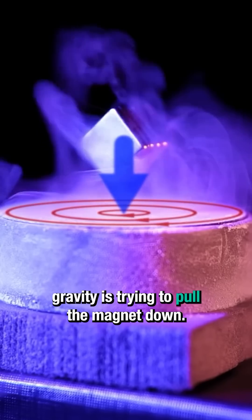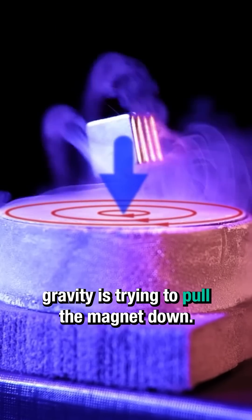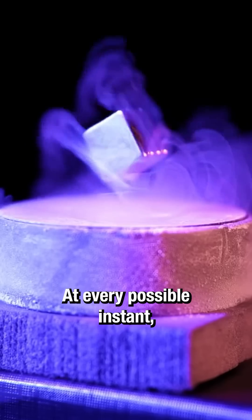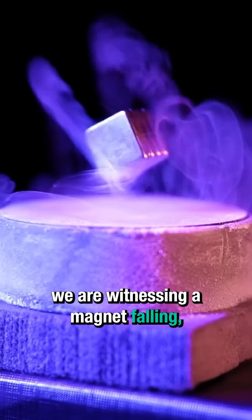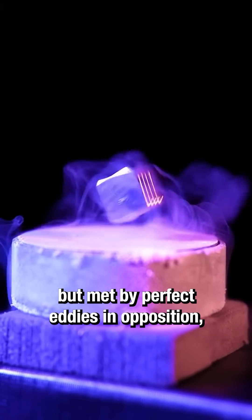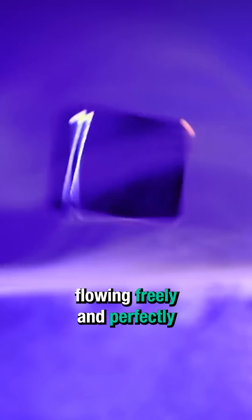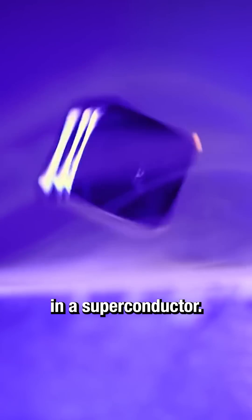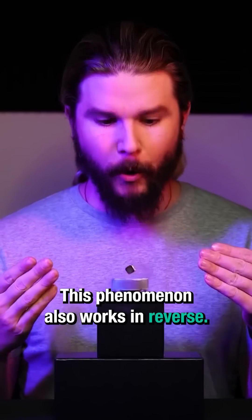Above the superconductor, gravity is trying to pull the magnet down. At every possible instant, we are witnessing a magnet falling but met by perfect eddies in opposition, flowing freely and perfectly in a superconductor. This phenomenon also works in reverse.